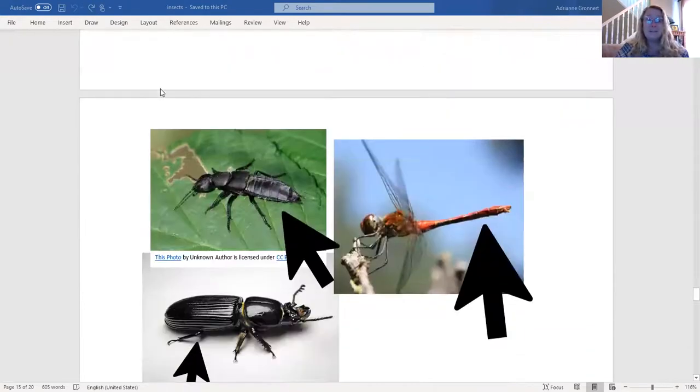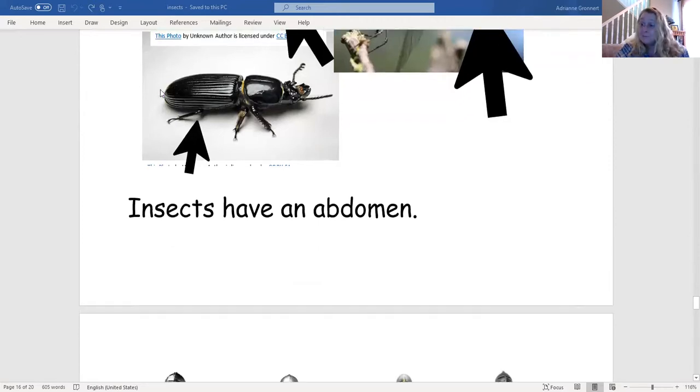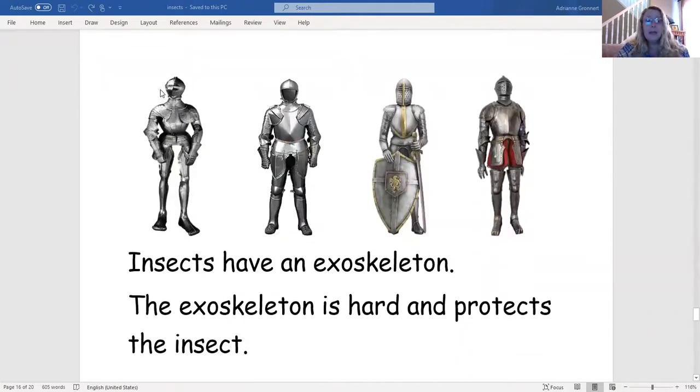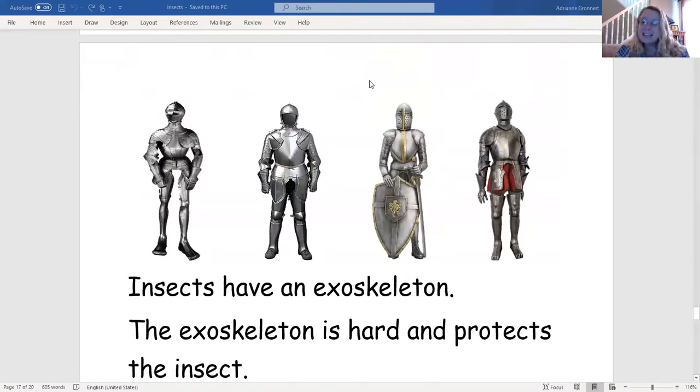Let's keep reading. Insects have an abdomen. Insects have an exoskeleton. Exoskeleton is hard and protects the insect. There we go. We read through all of the parts about what insects have.